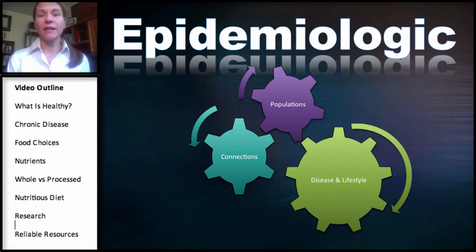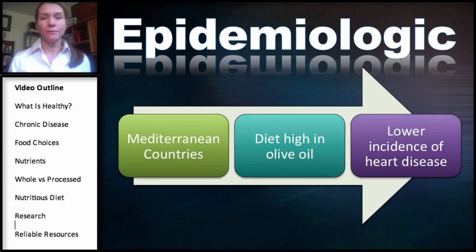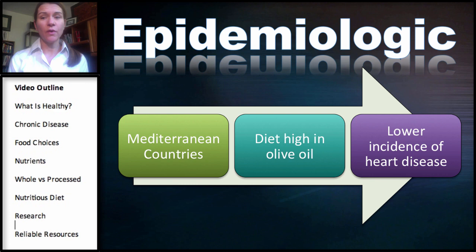An epidemiologic study is a study of populations. It looks for connections, associations, and correlations between disease and lifestyle. One famous example is looking at the Mediterranean countries. When they studied these countries, they found that people had a diet high in olive oil, and individuals eating this diet had a lower incidence of heart disease.